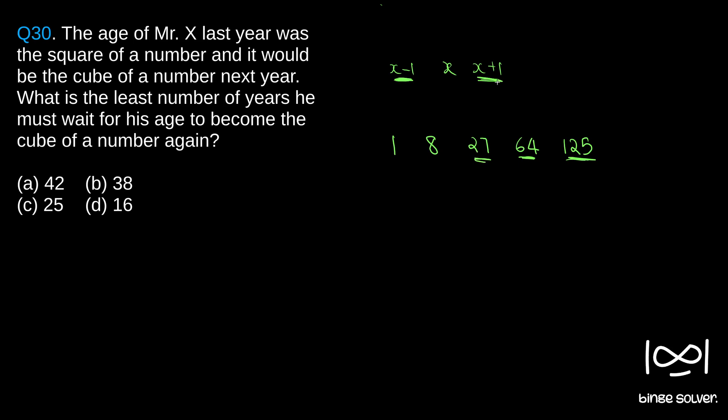If you take 27, 27 minus 2 is 25. 25 is a perfect square. So, this is the number we need.